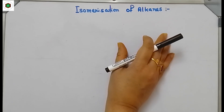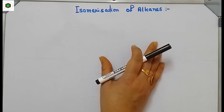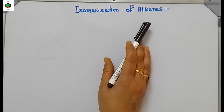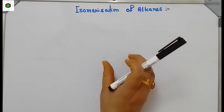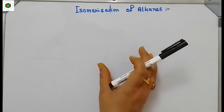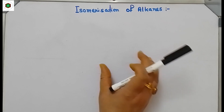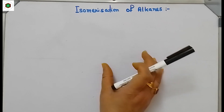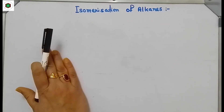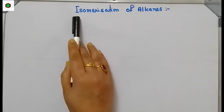Hello students, this is Indranimem from Sibrasayan. In this lecture I am going to explain isomerization of alkanes. First we should know what isomers are. Compounds having the same molecular formula but different structures are called isomers, and conversion of one isomer into another is called isomerization.